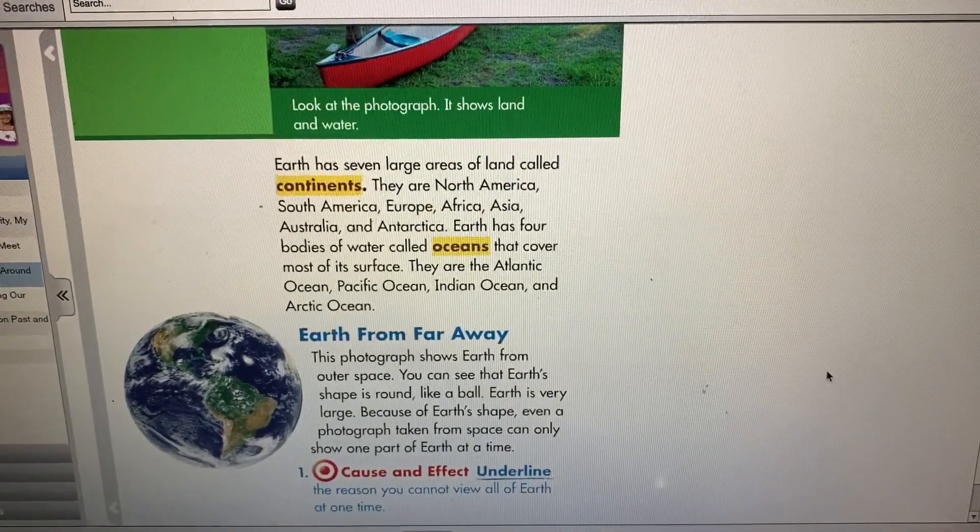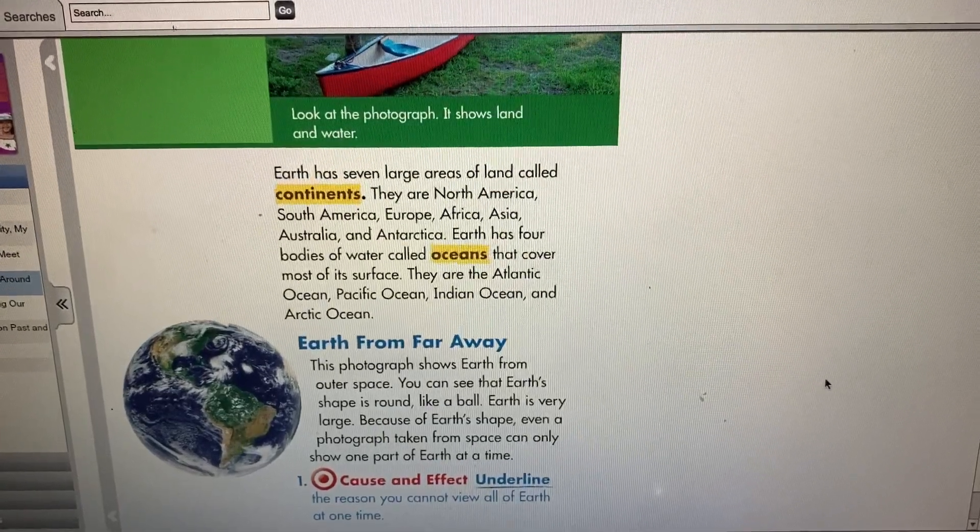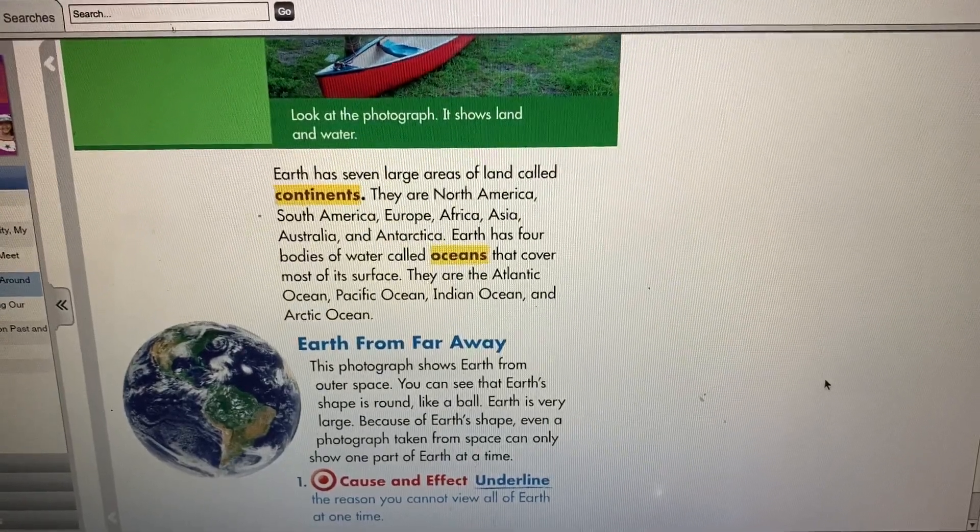Earth has four bodies of water called oceans that cover most of its surface. They are the Atlantic Ocean, Pacific Ocean, Indian Ocean, and Arctic Ocean.